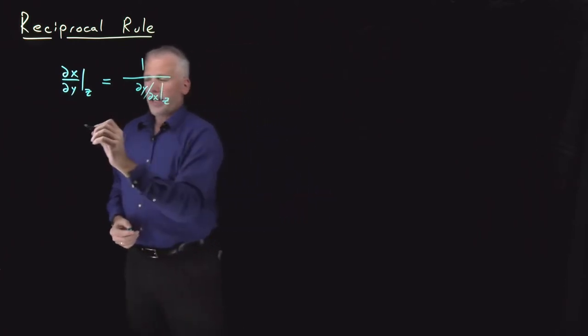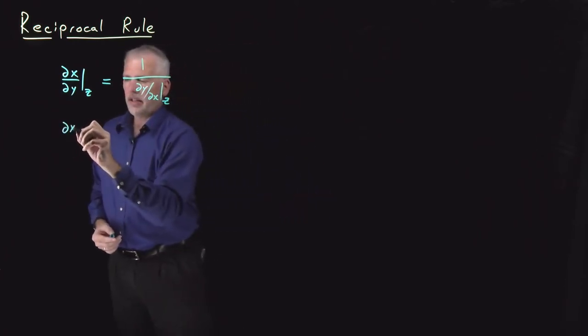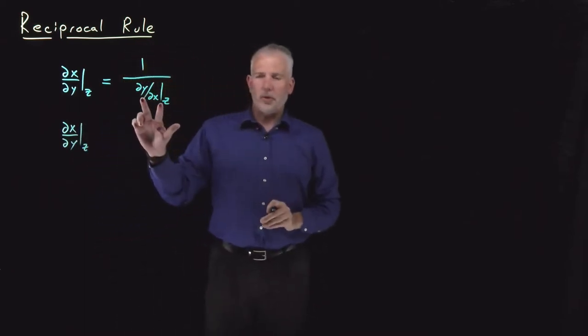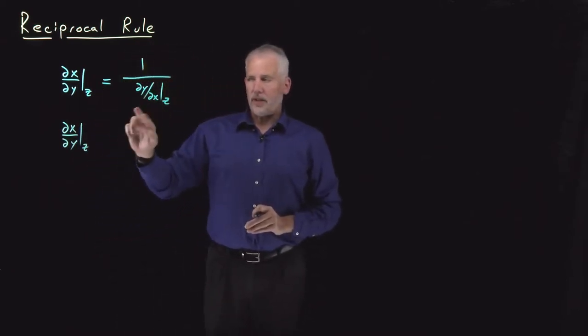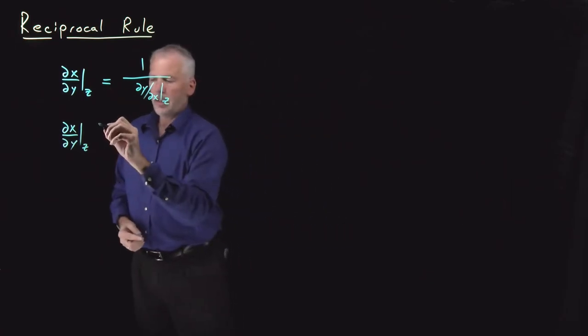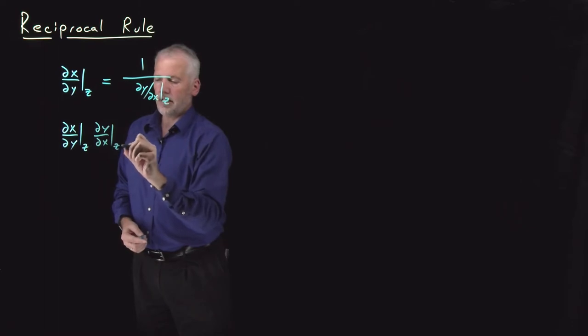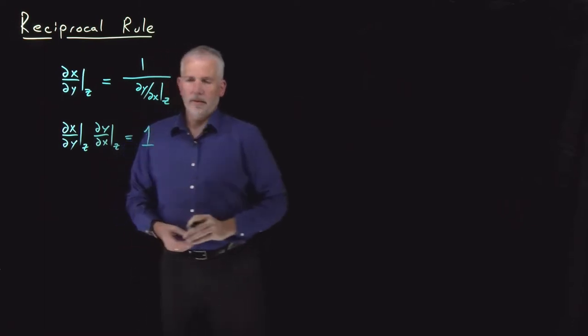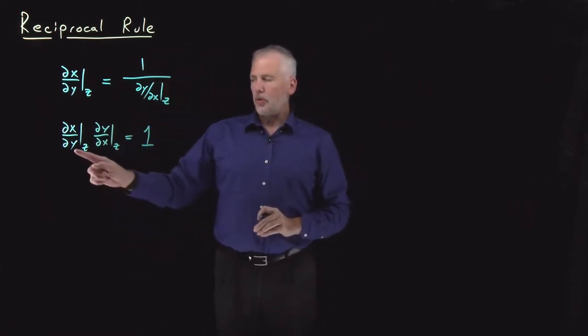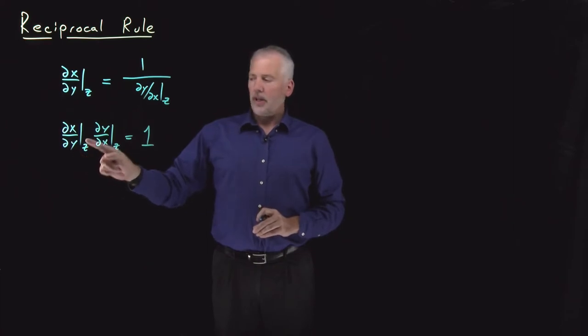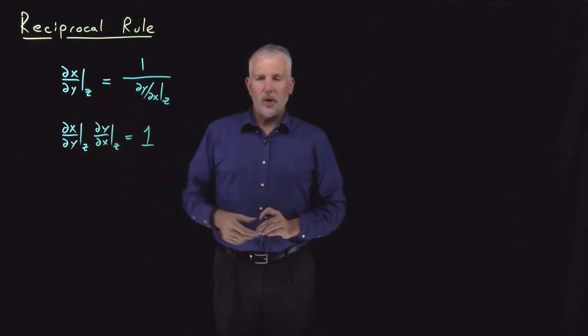Another way of writing that identity, dx dy at constant z, if I move this derivative over to the other side out of the denominator up into the numerator, it looks like dy dx at constant z over here. You can remember the reciprocal rule as this partial derivative multiplied by its reciprocal gives us 1.